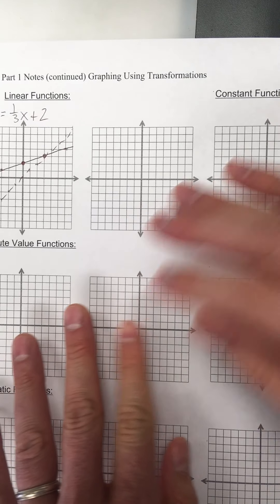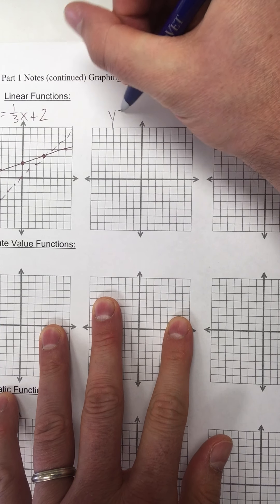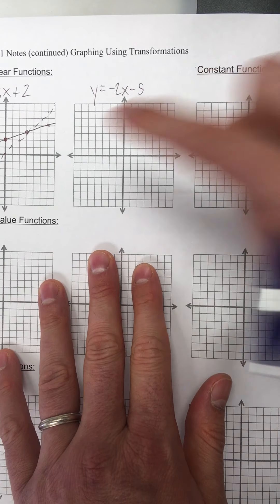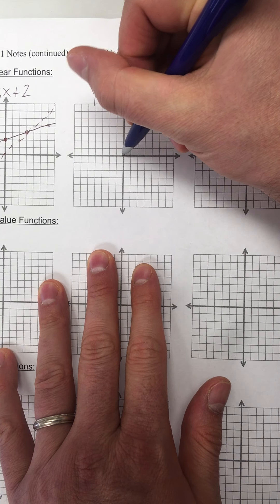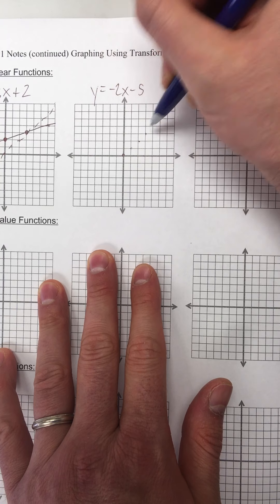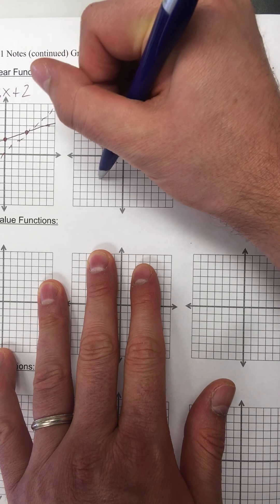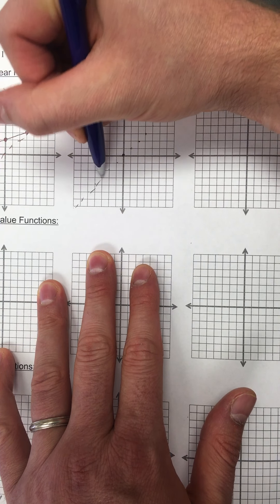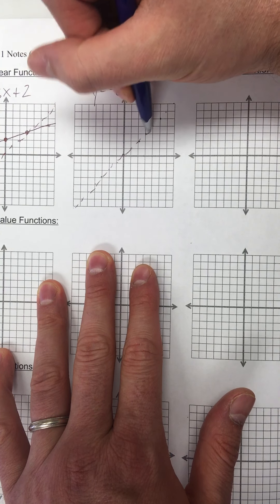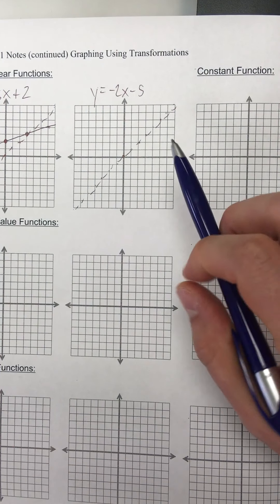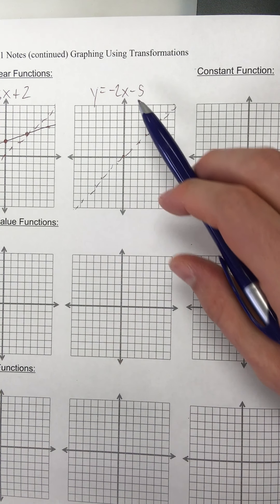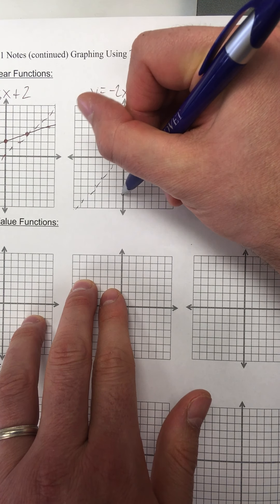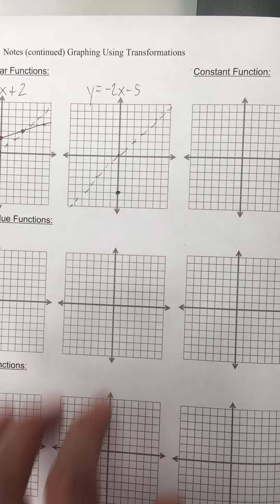Let's look at another linear example. If I have y equals negative two x minus five. Again, the parent function, just like the last one, would start at (0,0) and go up one over one. Same parent function for every linear function. Now, this time I have a minus five at the end — that moves my graph down five. So here's my starting point, my y-intercept, down five.